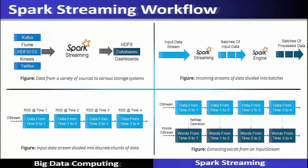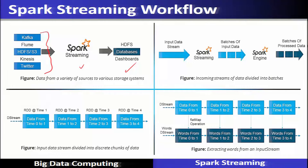The Spark streaming workflow takes input from Kafka, Flume, HDFS, Kinesis, and Twitter. After processing, the data is stored onto HDFS, databases, dashboards, and so on.